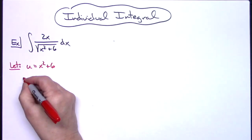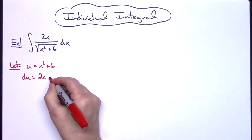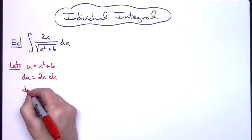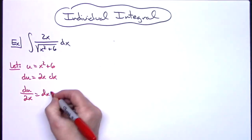When I take the derivative of both sides, we'll have du equals 2x dx. I'm going to go ahead and solve for dx. So I'll have du over 2x equals dx.